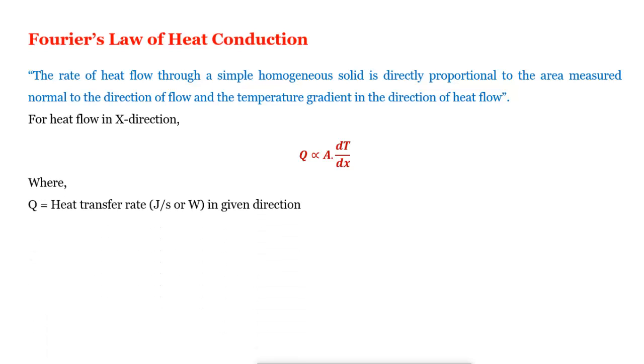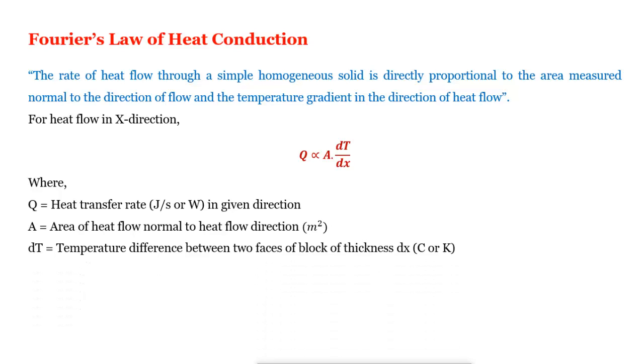Where Q is the heat transfer rate, that unit will be Joule per second or Watt in the given direction. A will be the area of heat flow normal to the heat flow direction, that will be meter square. And dT is the temperature difference between the two surfaces of the block thickness dx. Its unit is centigrade or Kelvin.